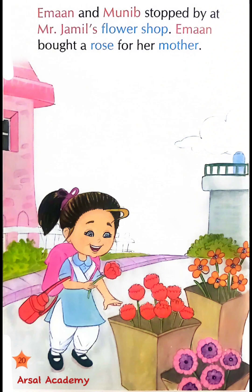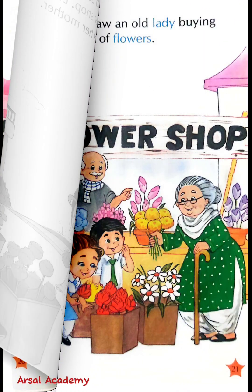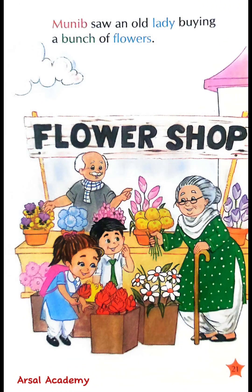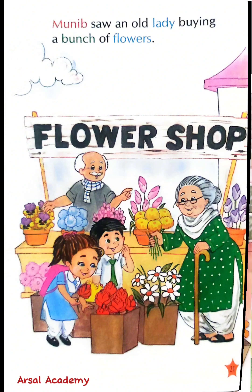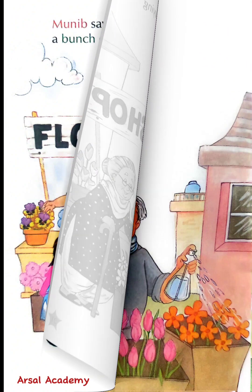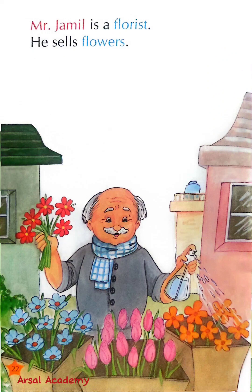Ali and Manib stopped by at Mr. Jameel's flower shop. Eamon bought a rose for her mother. Manib saw an old lady buying a bunch of flowers. Mr. Jameel is a florist. He sells flowers.